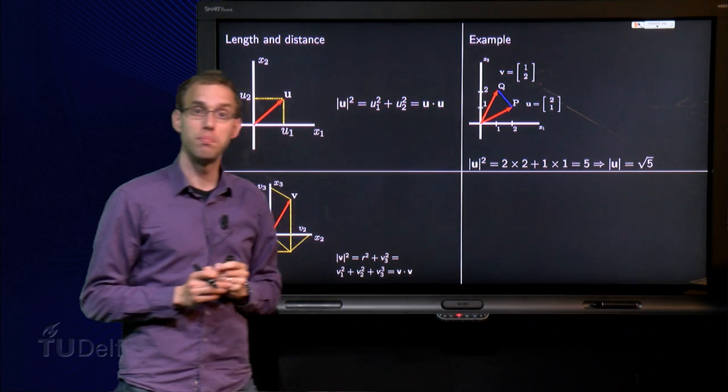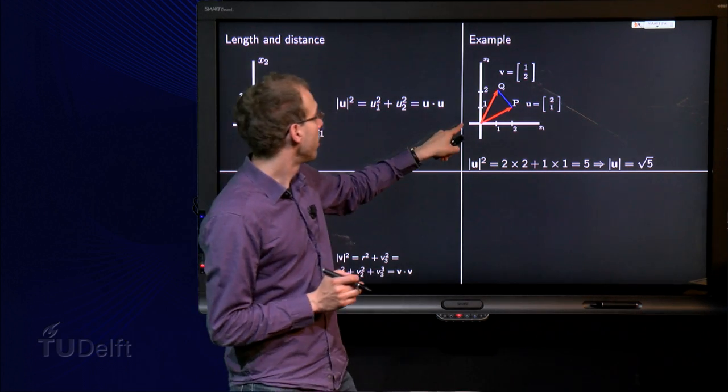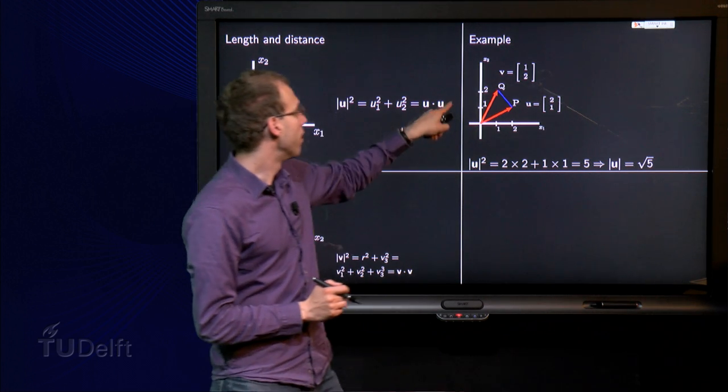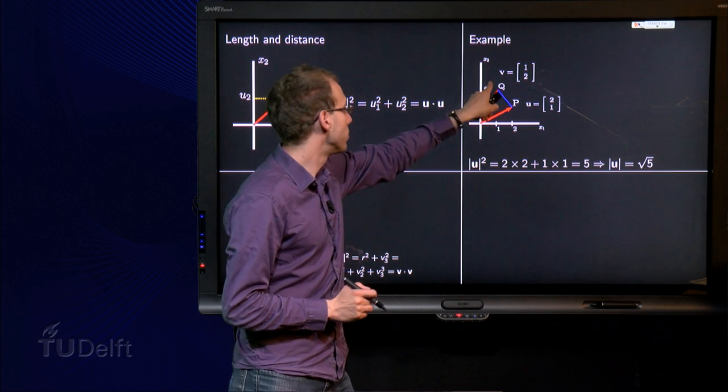Here we have the points p and q. u equals (2, 1) goes from the origin to p, and v equals (1, 2) goes from the origin to q.